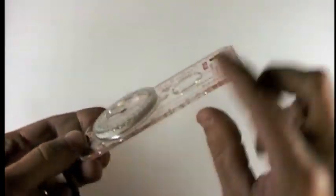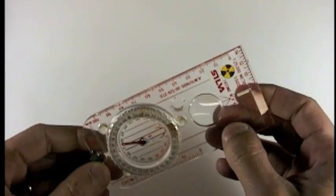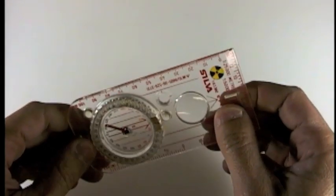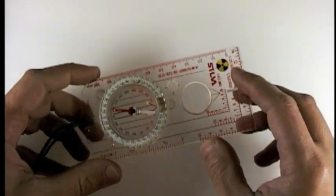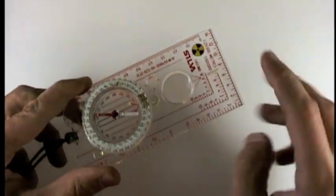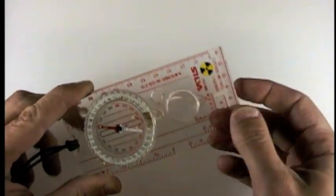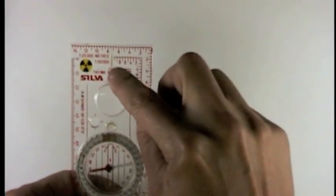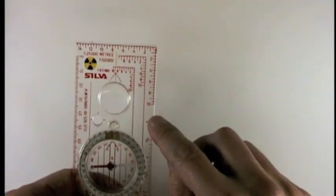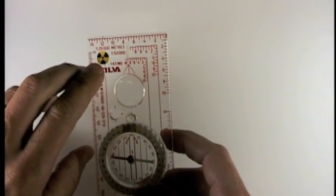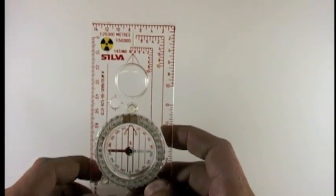They're called a baseplate compass because there's this baseplate that is a key component of the way the thing works and composes most of the structure. There are lots of ways these can be laid out, but these in practice are always clear bases, usually with a magnifier, a ruler on one side, and scales that correspond to various types of maps. There'll be other information if they are illuminated, they're radioactive. We'll talk about that later though.